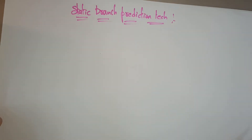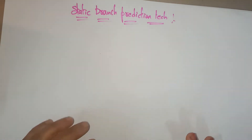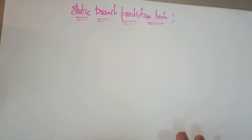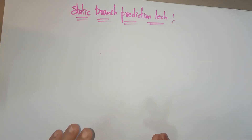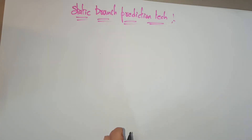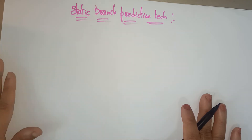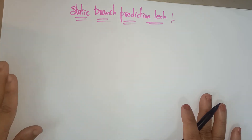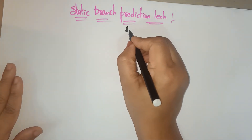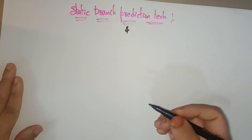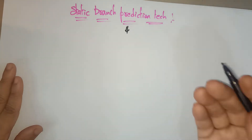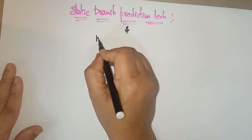Hi students, welcome back. Let's continue with the static branch prediction technique. In the previous video I explained what branch prediction means. The branch handling techniques are of two types: one is static and another is dynamic. Now let's have a look at what exactly the static branch prediction technique is.